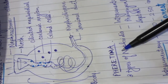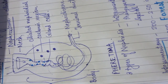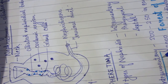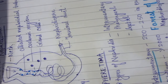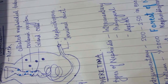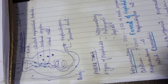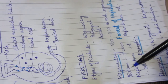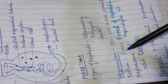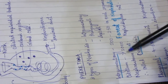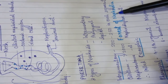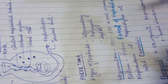Next comes Pheretima, that is the earthworm. In the earthworm there are 3 types of nephridia. There are approximately 2,000 nephridia present. In the region of the clitellum, there are more nephridia present, and we call it the 'Forest of Nephridia' because there are so many.